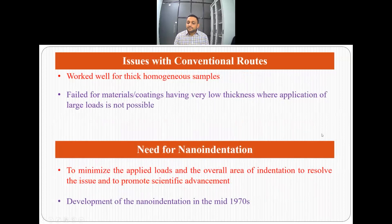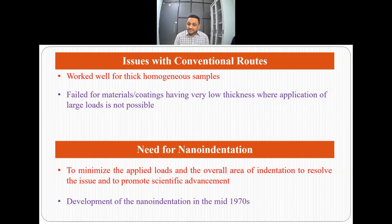But there were problems with the conventional routes. They worked well for thick homogeneous samples, but for thin coatings or materials with very low thickness they failed, because thin materials or coatings were not able to accept large loads and the application of large loads was not possible. So it was very hard — almost impossible — to determine the hardness of thin films or coatings using the conventional route. A need was felt for nano-indentation to minimize the applied load and the overall area of indentation, so that we can characterize thin films and coatings.